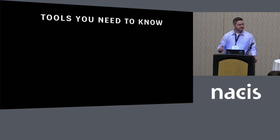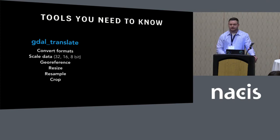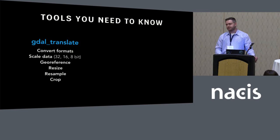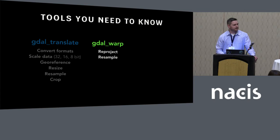In order to do this kind of thing, there are a few tools I think you need to know — the top three I use pretty much every day. The first is GDAL Translate. This is the workhorse of the GDAL suite. It does things like convert formats — you can go from complex NetCDF or HDF data formats and get GeoTIFFs or JPEGs out. You can scale data from 32-bit floating point to something like an 8-bit JPEG. And you can georeference data really easily, as well as resize, resample, and crop data, all from that tool.